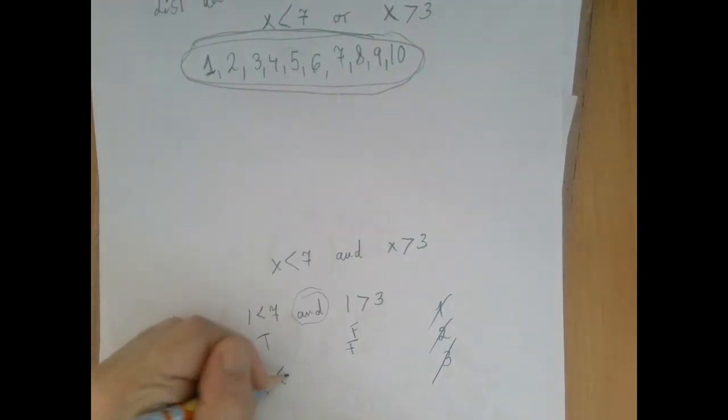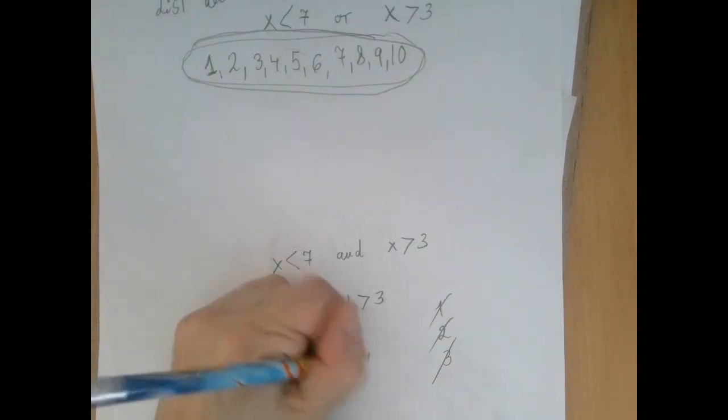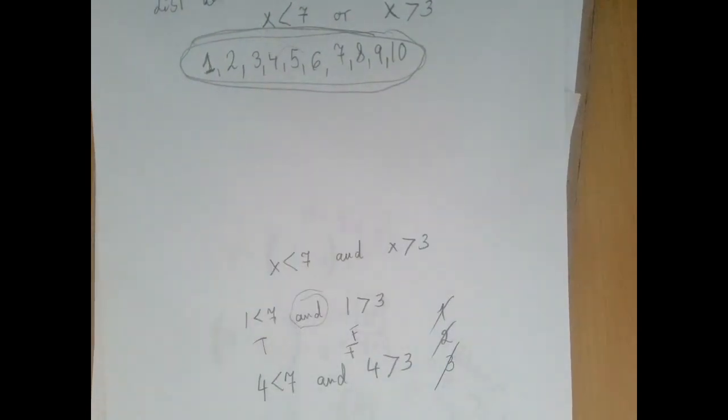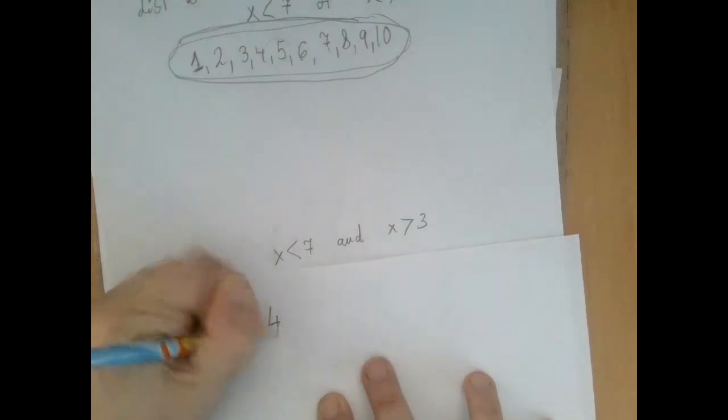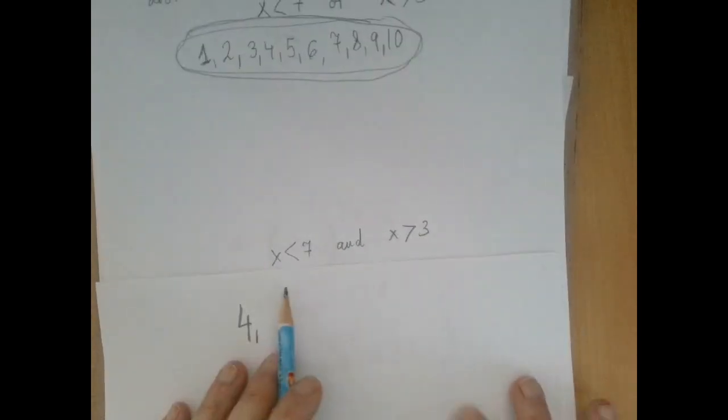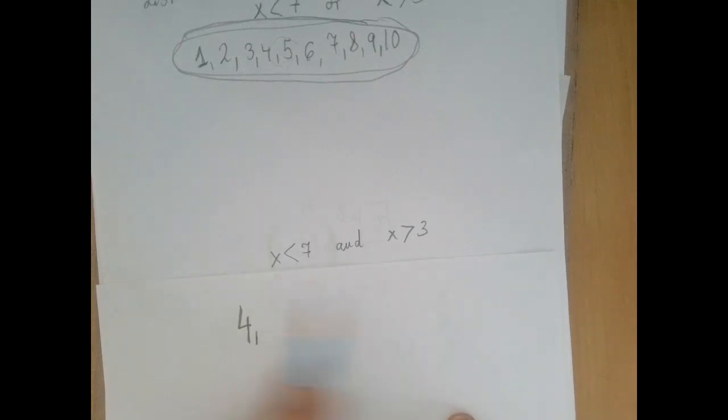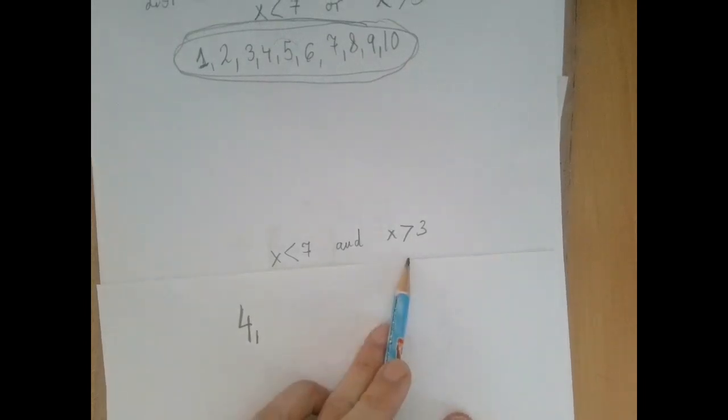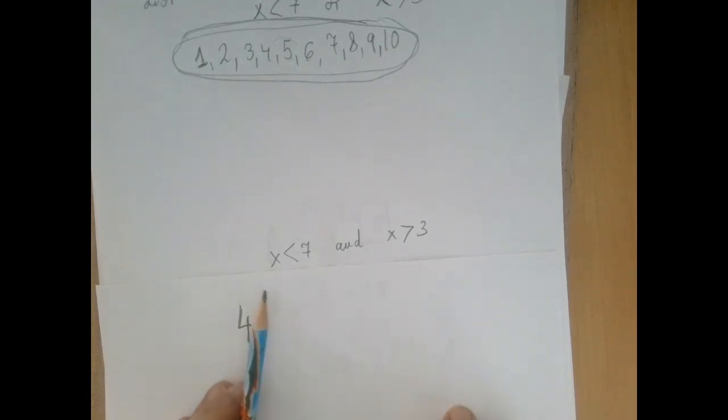Now let's look at 4. 4 is less than 7 and 4 is greater than 3. True, true. So we found 4 to be on this second list. And notice that basically the two conditions are sort of locking in the numbers from two directions. Greater than 3, so after 3, but before 7.